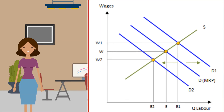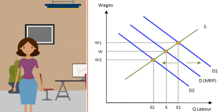Now let's consider the graphs. If the demand for labor rises from D to D1, the wage rate rises from W to W1 and employment increases from E to E1. If demand falls from D to D2, the wage rate falls from W to W2 and employment falls to E2.